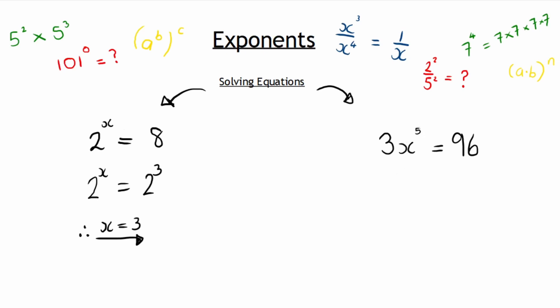And so we will try our best to see if we can get the exponents equal to each other. But before we start, we first need to get rid of this coefficient, so we divide both sides by 3 and we are left with x to the power of 5 equaling to 32.